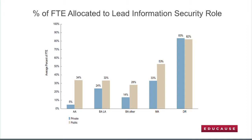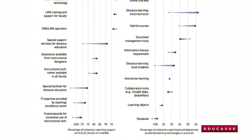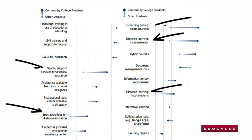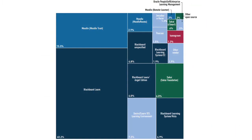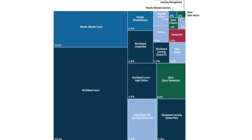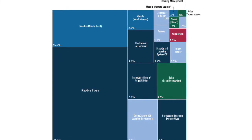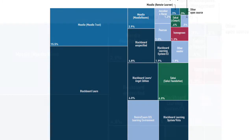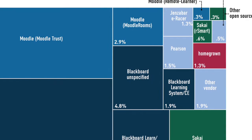Public institutions generally allocate more of an FTE to the lead information security role than private institutions. We also learned that community colleges generally outpace other institutions in the areas of distance education and online learning. The enterprise application module gave us insight into the market share for open source versus vendor products, with open source most widespread in two application areas: learning management and content management.